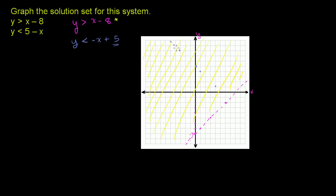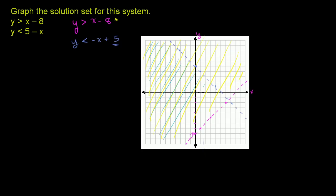So the line is going to look something like this. This is the dotted line version of y equals negative x plus 5 — dotted because we're not including it. Now for any x you pick, negative x plus 5 gets onto that line, but we only care about the y's that are less than that value. So the solution set for this second inequality is all of the area below this blue line.